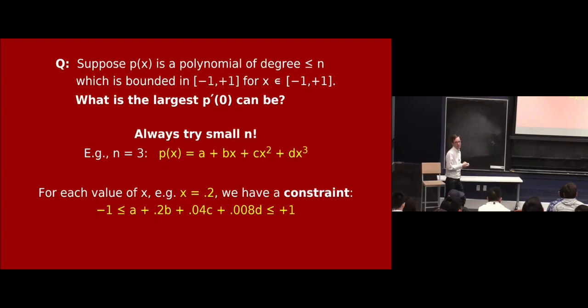So you have infinitely many constraints like this on a, b, c, and d, right? One for every real number between minus 1 and 1. And you're curious how big the derivative at 0 can be. What is the derivative at 0 of this polynomial? It's b, yeah. If you differentiate and plug in x equals 0, you get b. So in some sense, we want to maximize, it's like a, b, c, and d are real parameters. We want to maximize b subject to all these constraints. You don't know how b could be.